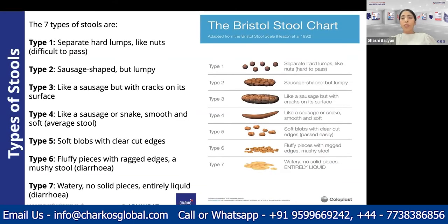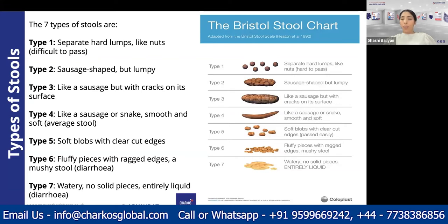The Bristol Stool Chart classifies feces into seven different types, ranging from very hard stools to very watery and liquidy stools. Type 1 is separate hard lumps like nuts, which are difficult to pass. Type 2 is sausage-shaped but lumpy and hard. Type 3 is like a sausage but with cracks on the surface. Type 4 is like a sausage or snake, smooth, and represents the average stool type. Type 5 is soft blobs with clear-cut edges. Type 6 is fluffy pieces with ragged edges and mushy, diarrhea-like stools. Type 7 is watery, diarrhea-like stools.